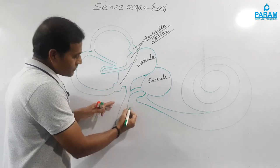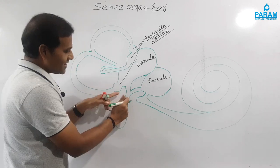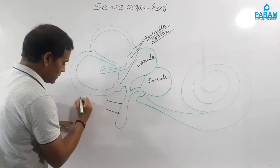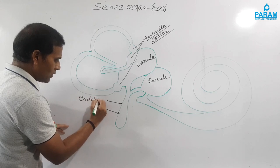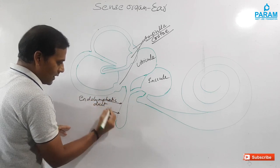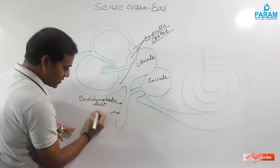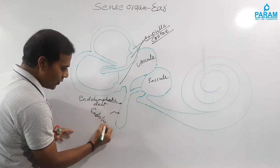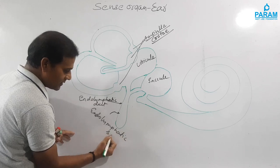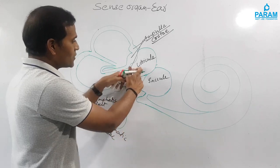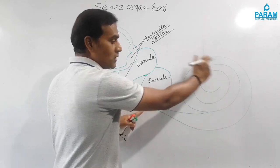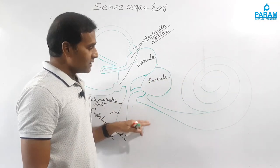There is a structure that arises from a common duct called the endolymphatic duct, and this structure is called the endolymphatic sac. The utricle and saccule are present here. As already mentioned, the saccule is connected to the coiled structure of the internal ear — that is, the cochlea.